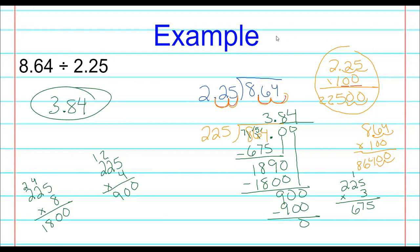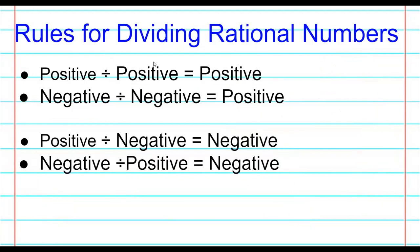Now we have rules, and they're really the same rules we had for multiplying rational numbers. A positive divided by a positive is a positive. A positive divided by a negative is a negative. A negative divided by a positive is also negative. A negative divided by a negative is a positive. These are the same rules — we just changed multiplication to division.